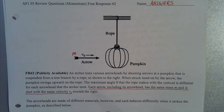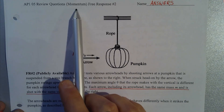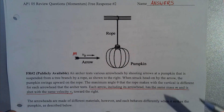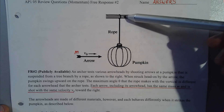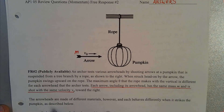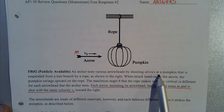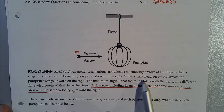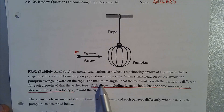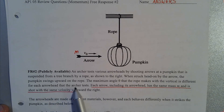In this video we're going to be looking at a sample AP Physics question dealing with unit 5 content on momentum and impulse. This is a publicly available question. We've got a diagram of an arrow being shot towards a pumpkin hanging from a branch by a rope. An archer tests various arrowheads by shooting arrows at a pumpkin suspended from a tree branch by a rope. When struck head-on, the pumpkin swings upward and the maximum angle theta the rope makes with the vertical is different for each arrowhead.